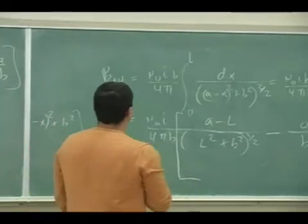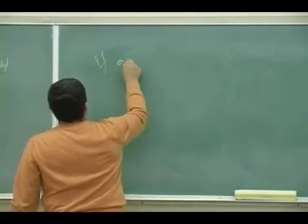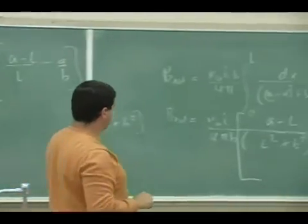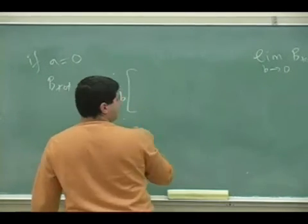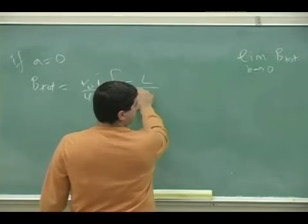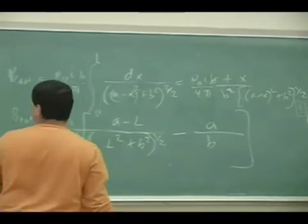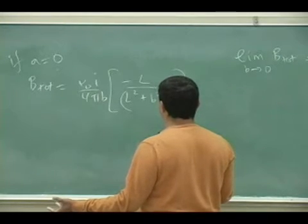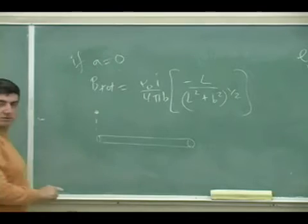Let me get other points here. What if A is zero? If A is zero, what do we get? We get mu zero I over four pi. If A is zero, this part cancels out, and you just have negative L over L squared plus B squared to the one-half, and you really can't simplify that too much more. So that would give us the magnetic field along the wire at some point here, if A is zero.